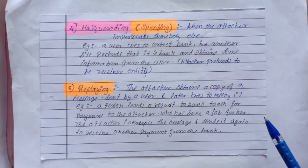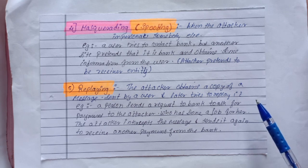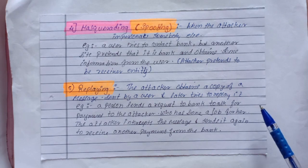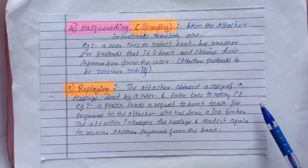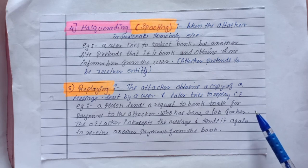Another type of attack is replaying. The attacker obtains a copy of a message sent by a user and later tries to replay it. For example, a person sends a request to a bank asking for payment to the attacker for some job done. The attacker intercepts the message and sends it again to the bank to receive another payment.